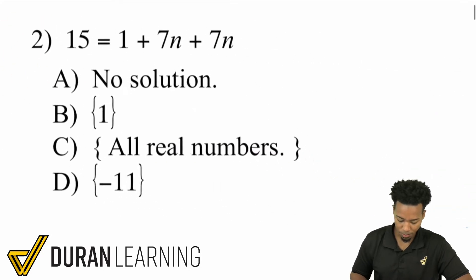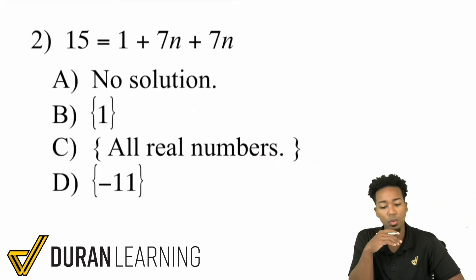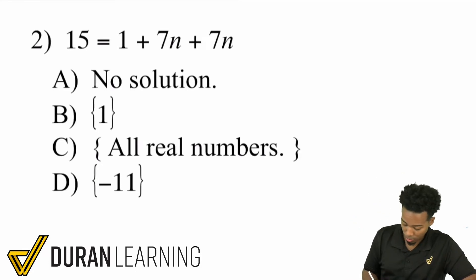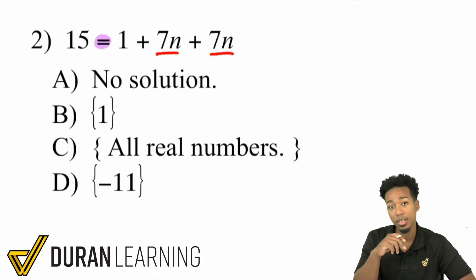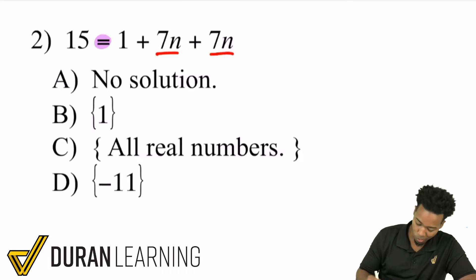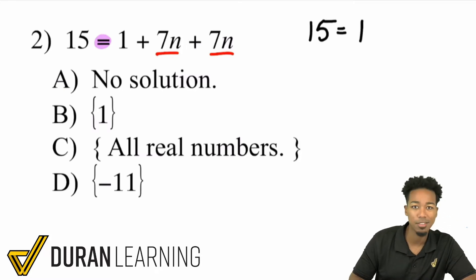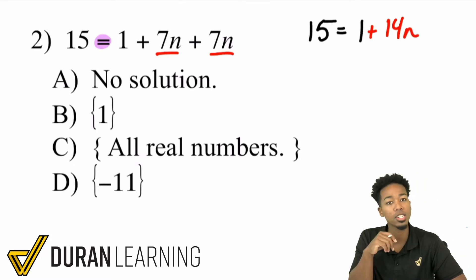So over here, we have 15 equals 1 plus 7n plus 7n. Okay, so what I'm going to observe here is again, here's the equal sign. And on the right side, we have 7n and 7n. We can combine those first. And what we're going to have here is going to be 15 equals 1. And then 7n plus 7n, they are like terms. And 7 plus 7 is 14. So we have plus 14n right there.